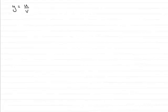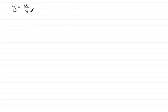Hi there. In this video I want to show you how we prove the quotient rule for differentiation, where we've got y equals u divided by v, and u and v are functions of x. This is not a rule that most exam boards ask you to prove, but I'm just doing it here just in case you'd like to know how it's done.